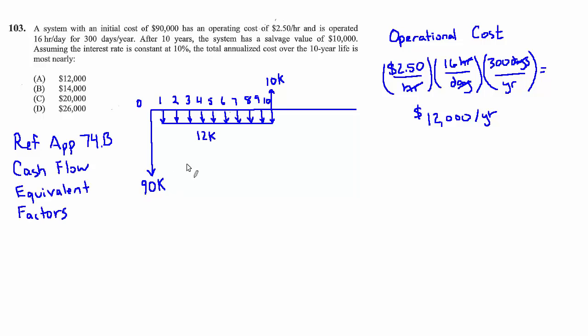Let's start with the upfront cost. I'm going to call that A1. So A1 is a present value and we want to change it to an annualized value, so we're going to use the cash flow factor A over P. Interest rate is 10% and the number of periods is 10 years.